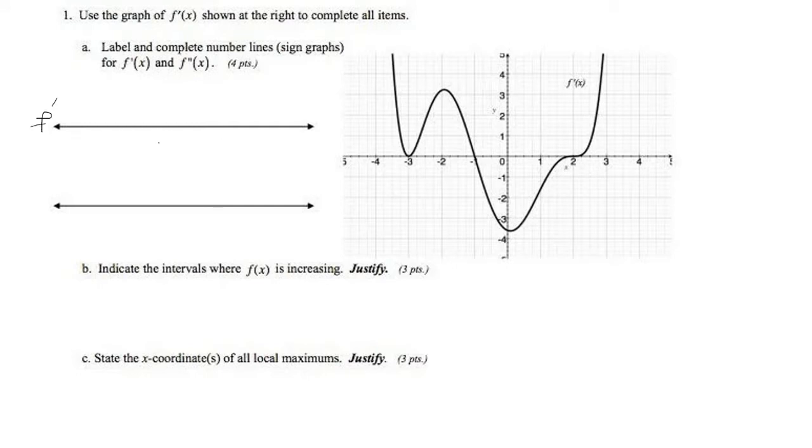What we're going to put on here is when the derivative is 0 or undefined. Because the derivative is continuous, it's always going to be defined. So we're looking at the 0s of this graph. So that's going to be at negative 3, negative 1, and 2.